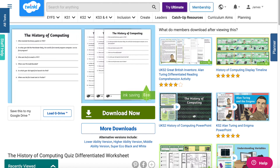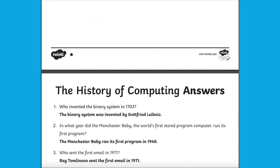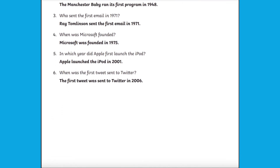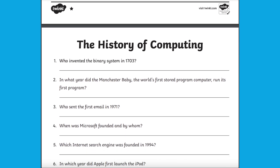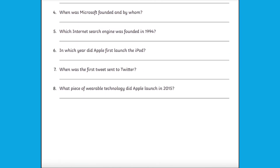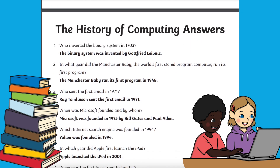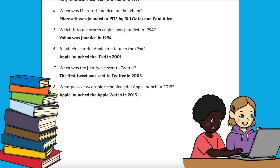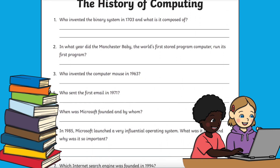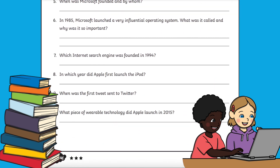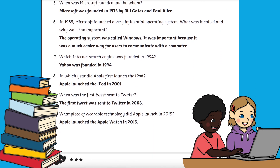Why not test your children's research skills when looking up the History of Computing with this History of Computing Quiz Differentiated Worksheet? Either in pairs or independently, complete the quiz as best they can and then children can research the unknown questions. To add a competitive element to this activity, this could be a time challenge — to see which pair in the class can complete their quiz first with all the answers correct. This task is differentiated to suit all children's abilities.